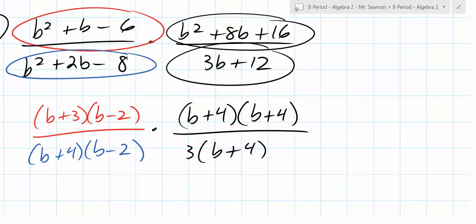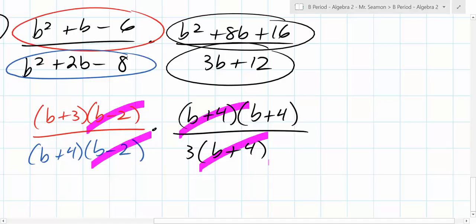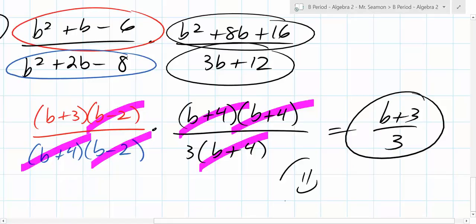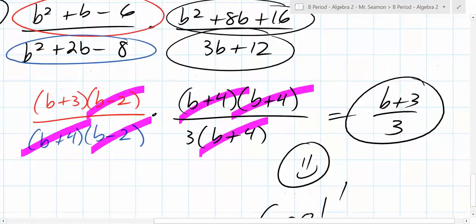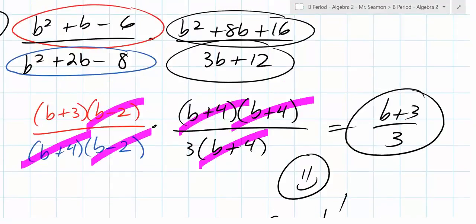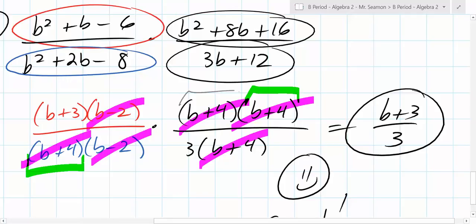And the reason this is nice is because now can you cancel some stuff? This is gone. This is gone. This is gone, right? And those two are... This is gone as well. So what are you left with? B plus 3 over 3. That was cool! Why is the second B plus 4 gone? Because you have this B plus 4 cancels with that one. This B plus 4 cancels with that, and this is gone, and this is gone, leaving you with just this and the 3.